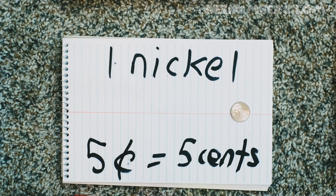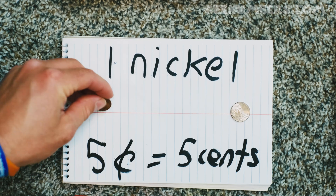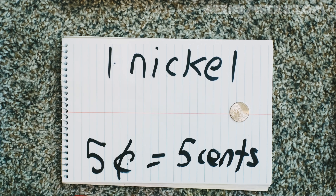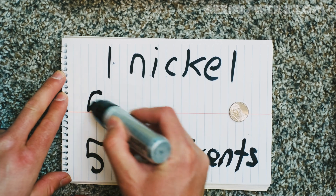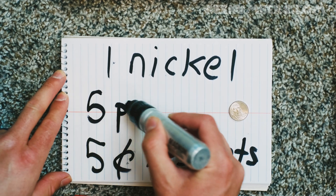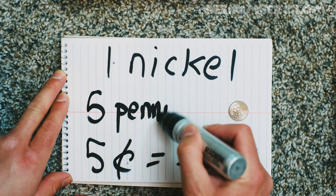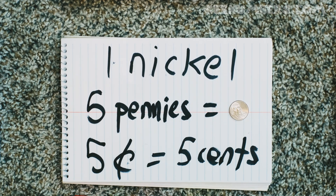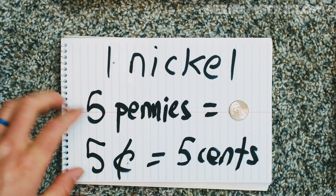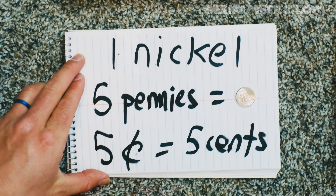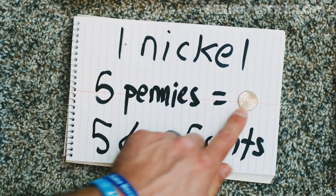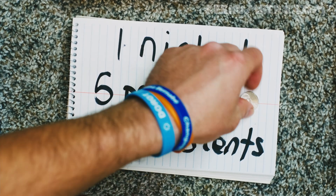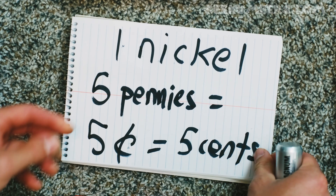So if it's five cents, that means five pennies is equal to a nickel. Five pennies — P-E-N-N-I-E-S — that's equal to one nickel. Five pennies is a nickel; it's five cents.